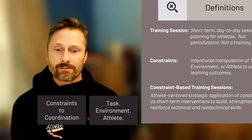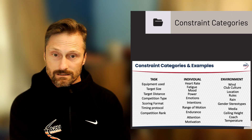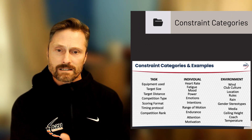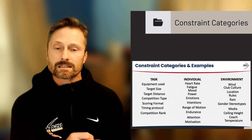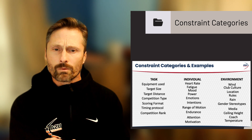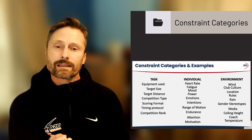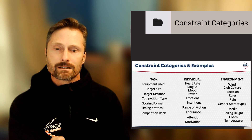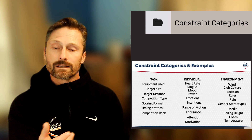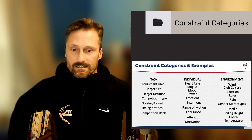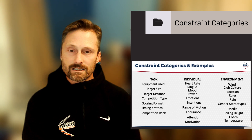Let's look at the task, environment, and athlete — the three categories of constraints. For the task, a coach might manipulate the type of equipment used, maybe the draw weight of the bow, or even the length of the limbs. That's manipulating the task. Other examples include target size, target distance, the scoring format, using cat whiskers as a constraint, or the connection ball that some of you have seen.